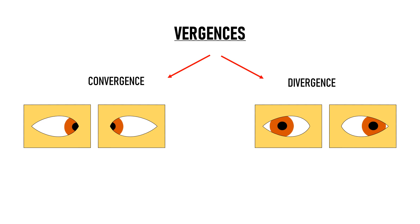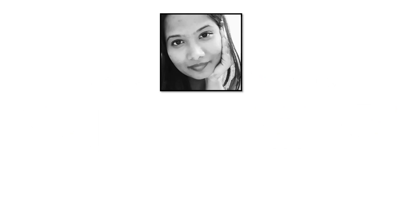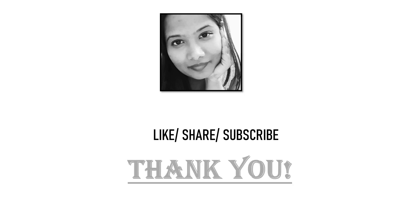So the two vergence eye movements are convergence and divergence. That was about ductions, versions, and vergences. I hope the topic of ocular movements is now clear to you. Please like and share this video with your friends and colleagues if you found it useful, and please subscribe to my channel to support free education. Thank you very much.